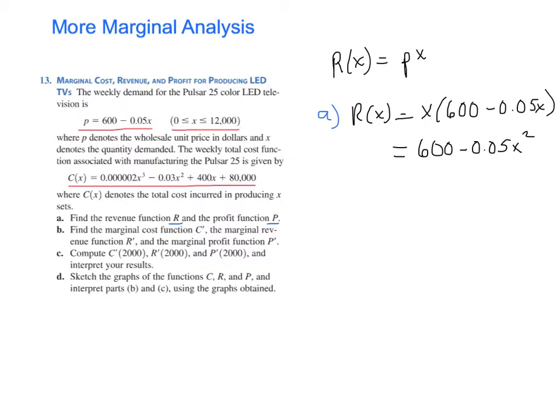The other thing you need to remember is that the profit function P of X is the revenue function, the amount you bring in, minus the cost function, the amount you spend to produce your units. So what we'll do is we'll subtract these two functions. We've got C of X over here in the problem, and I just computed R of X,